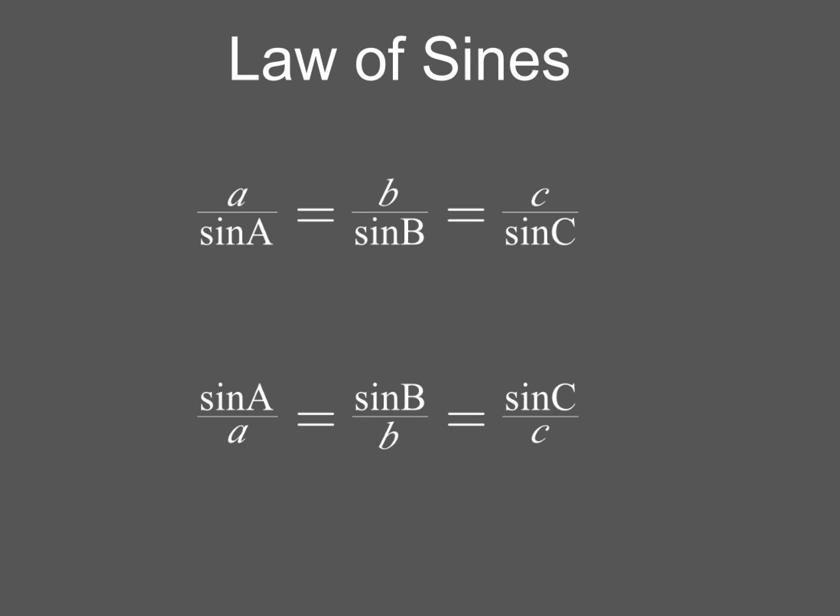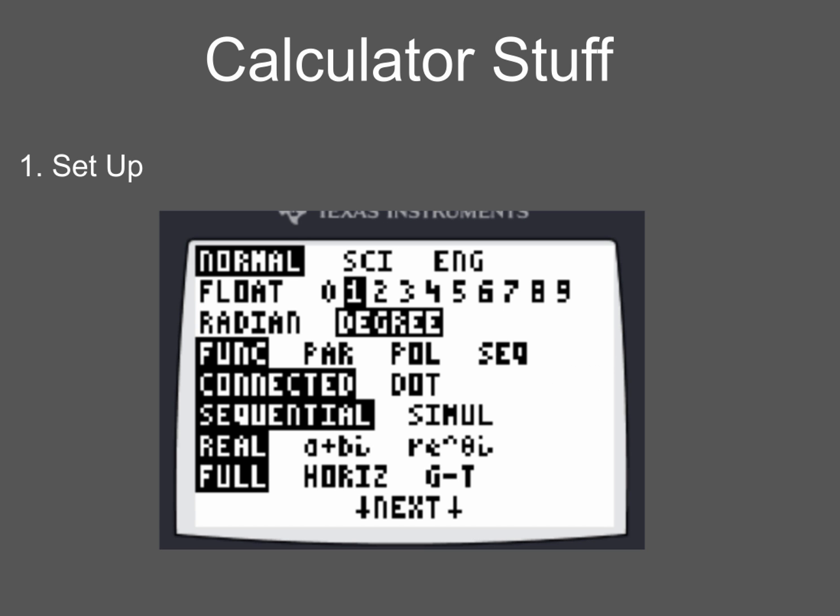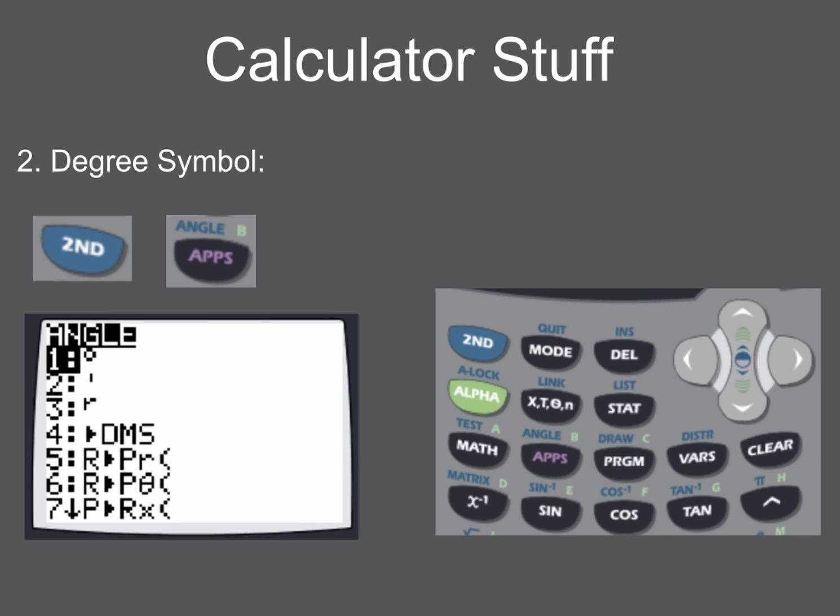But first, we've got to get our calculator set up. So first thing I want you to do in your graphing calculator is go ahead and set your decimal places to the tenths place and set your mode to degree. Second thing, you've got to know how to get to the degree symbol. And to do that, you simply hit the second key along with the apps key. That will get you into the angle menu.